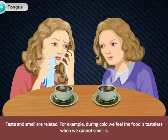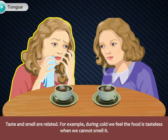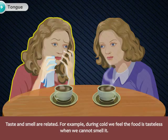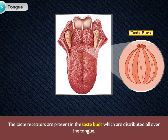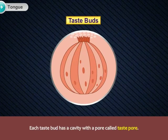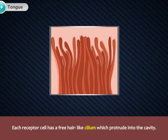For example, during a cold we feel the food is tasteless when we cannot smell it. The taste receptors are present in the taste buds, which are distributed all over the tongue. Each taste bud has a cavity with a pore called a taste pore. Each receptor cell has a free hair-like cilium which protrudes into the cavity.